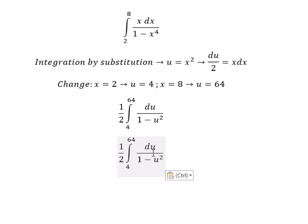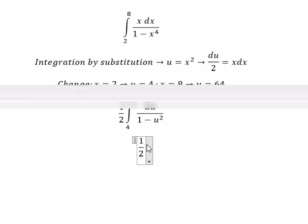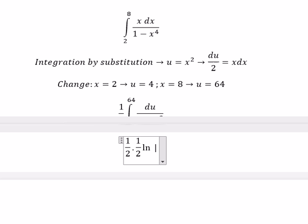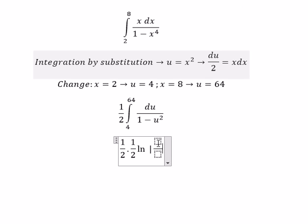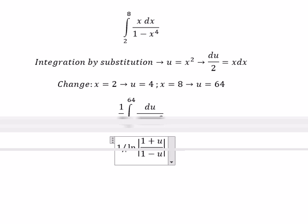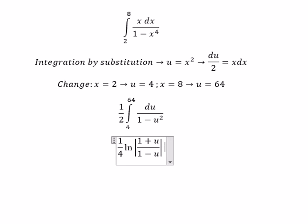The integration of this gives you 1 over 2 times ln of the absolute value of 1 plus u over 1 minus u. So you get 1 over 4 and we put the boundaries in here.